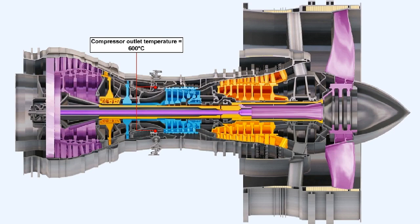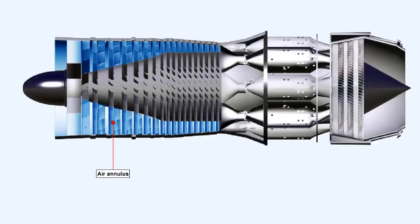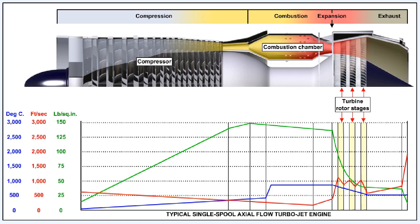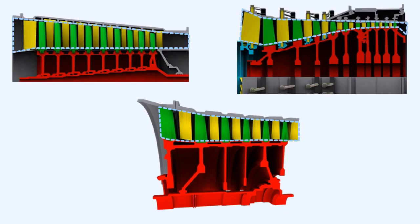The high pressures generated can result in compressor outlet temperatures of up to 600 degrees Celsius. Although we have only shown engines which have just centrifugal or axial flow compressors, some lower powered engines do use a combination of both. The space between the rotor drum and the compressor outer casing is called the air annulus. To maintain the axial velocity of the air reasonably constant as it passes through the compressor — as it's being compressed into a smaller volume and its density is increased — the size of the air annulus must be reduced. This gradual convergence is achieved by tapering the outer casing, the rotor drum, or in some cases a combination of both.